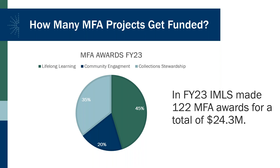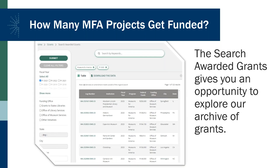On the IMLS website, you can use the search awarded grants function to explore the archive of past grants. All 122 MFA awards announced in August are listed there, along with those for prior years. You can search using criteria such as institution name, location, and keyword. Your search will retrieve basic information about each award, including the amount of federal funds awarded and a brief description of the proposed activities and expected results.